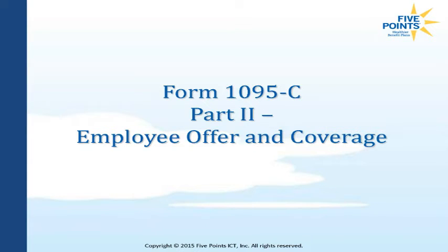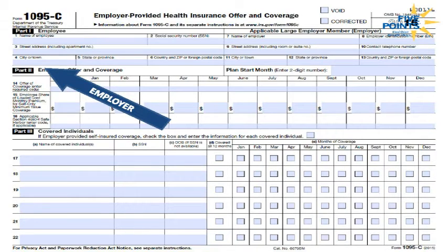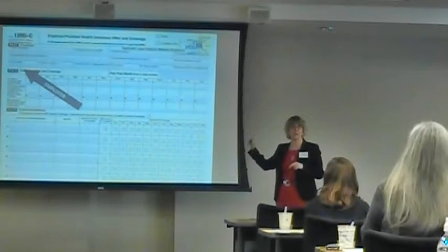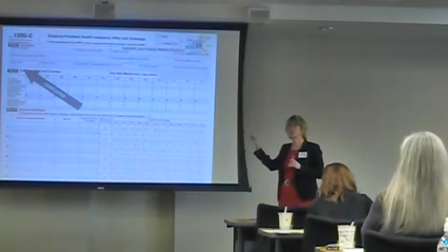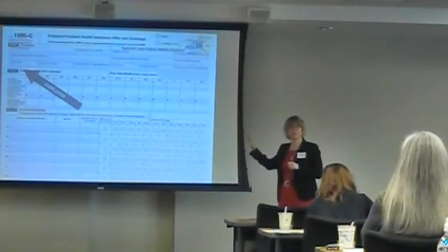Part two is where we're going to talk about and provide the IRS with information about whether or not we've met minimum value and affordability. The big takeaway with regards to part two is that any box that is left blank on line 14 or 16 is going to cause a problem with the IRS — unless we're aware that that problem is there.